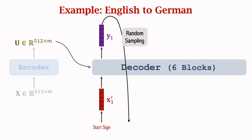We embed the next word into vector X'2. The sequence X'1, X'2 is fed into the decoder, which outputs Y1 and Y2. Y2 depends on X'1, X'2, and matrix U. Y2 is a probability distribution over the German vocabulary. We sample a German word according to this distribution, which becomes the next word in the translated sentence. The generated word is mapped into vector X'3. Taking X'1, X'2, X'3 as inputs, the decoder outputs Y1, Y2, Y3. Y3 depends on all three vectors X'1, X'2, X'3, and also on matrix U.